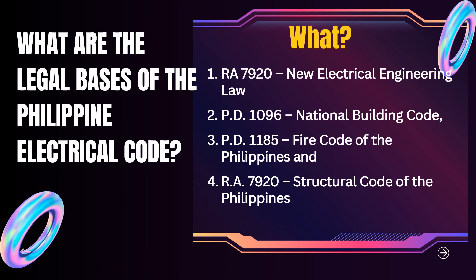What are the legal bases of the Philippine Electrical Code? One: RA 7920, New Electrical Engineering Law. Two: PD 1096, National Building Code. Three: PD 1185, Fire Code of the Philippines. Four: RA 7920, Structural Code of the Philippines.